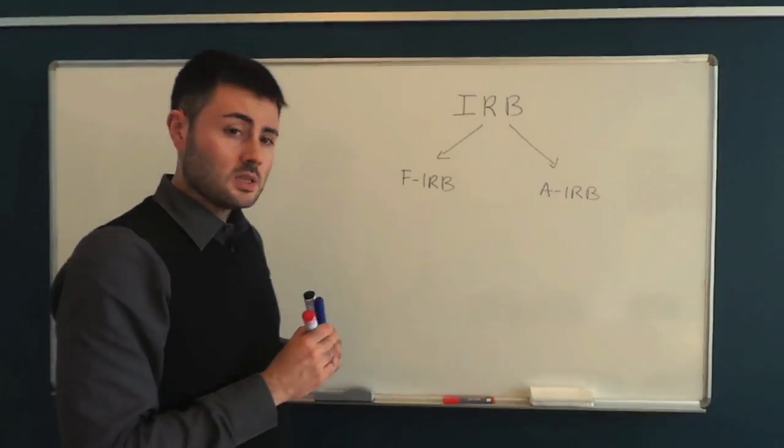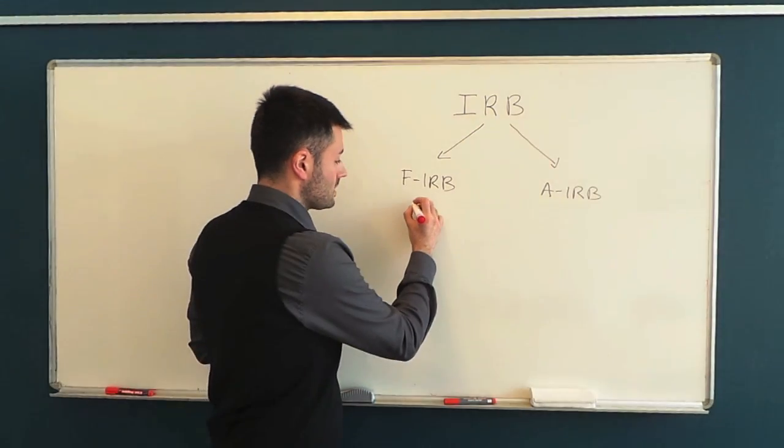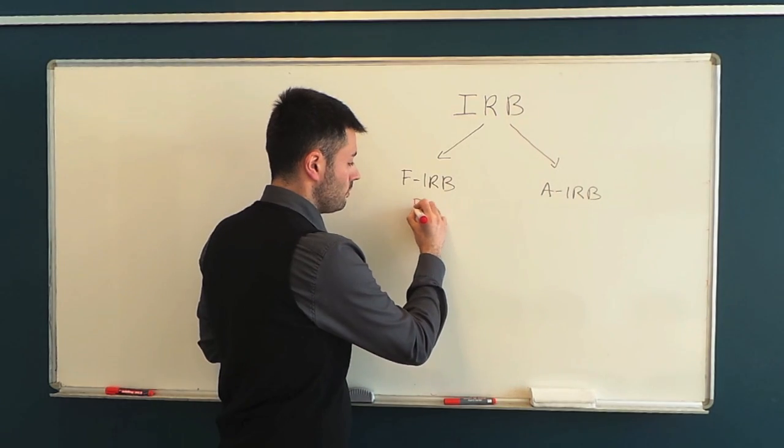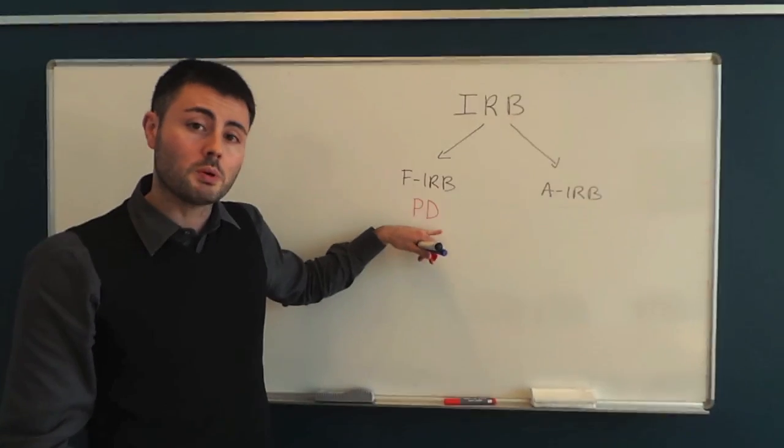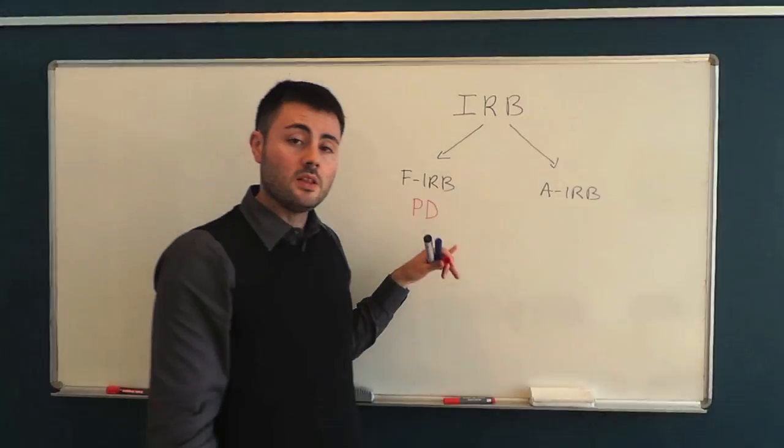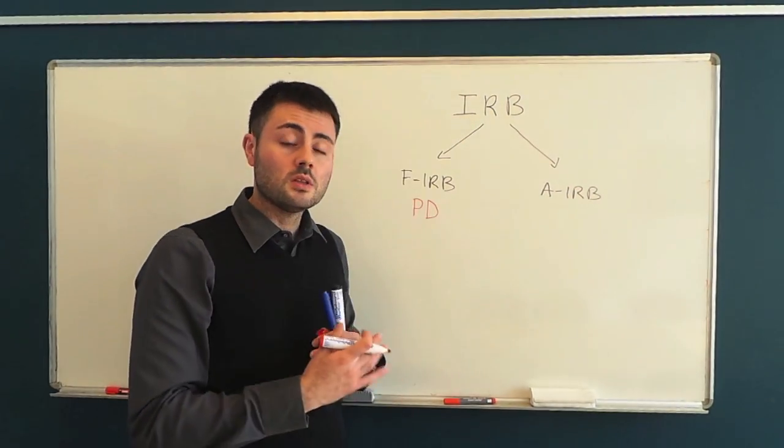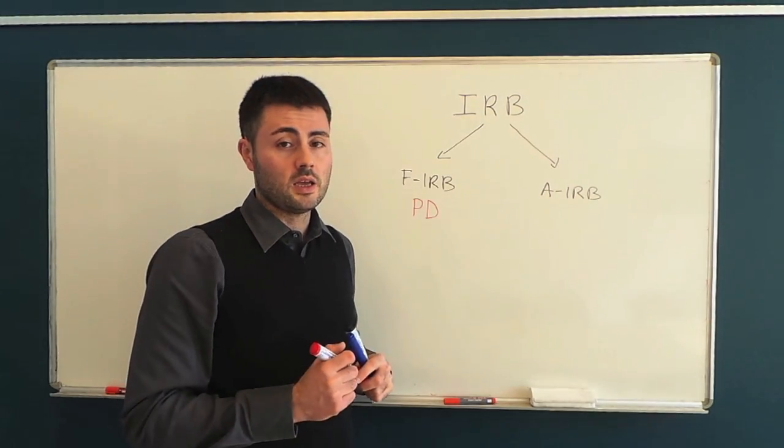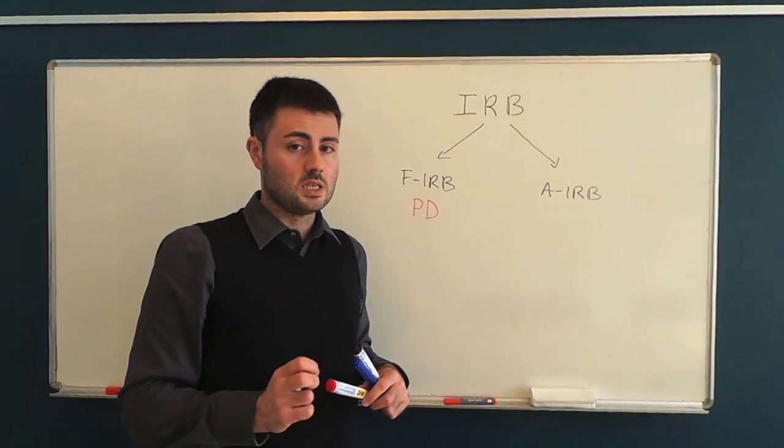The main difference is that under the foundation internal rating based approach, banks are supposed to compute a quantity called PD, probability of default. And they are free to compute this quantity using the method they like. And we will see some methods in week 4, 5 and 6.